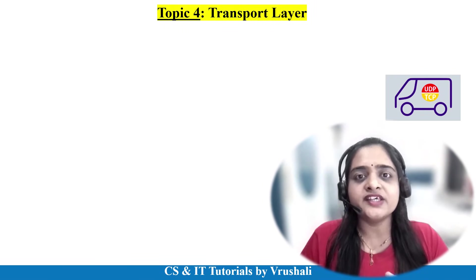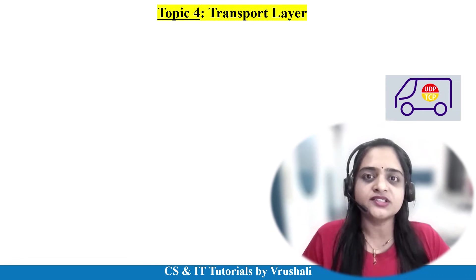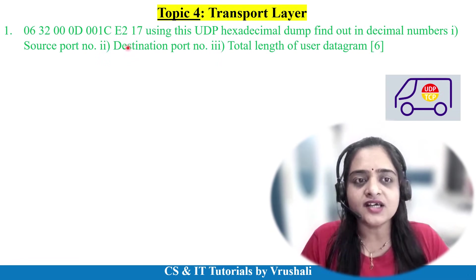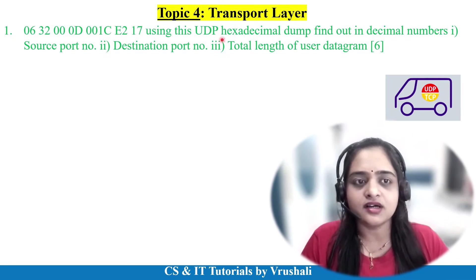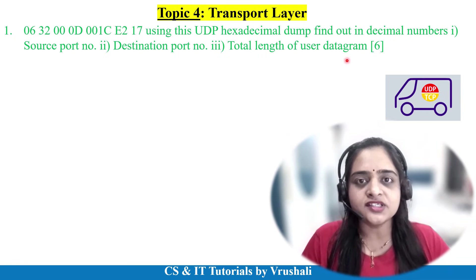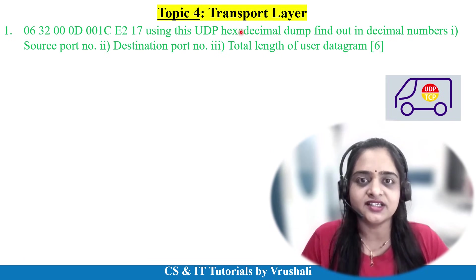The next unit is transport layer — again 10% numerical and 90% theoretical questions. For the numerical question, an address is given and you have to find the source port number, destination port number, and total length of the user datagram. Do not skip this question in preparation, as only one type of numerical is asked in this unit.